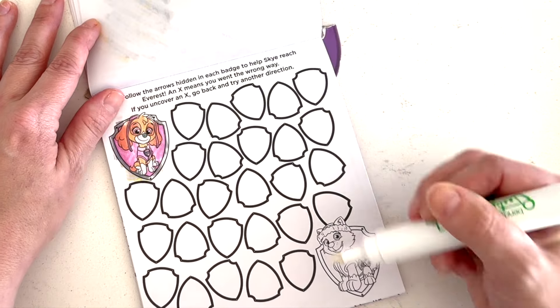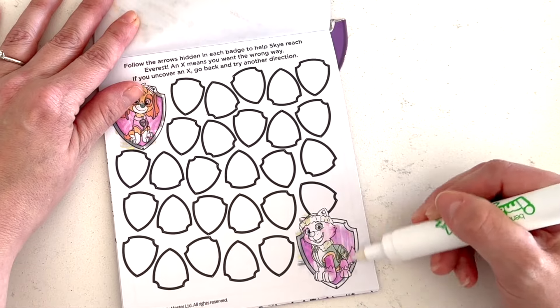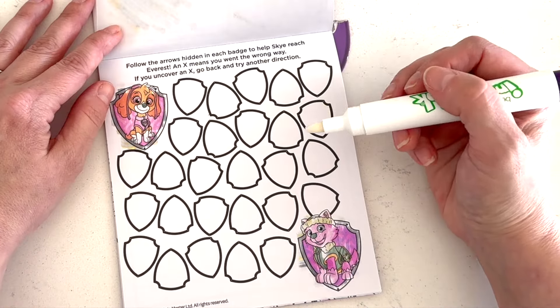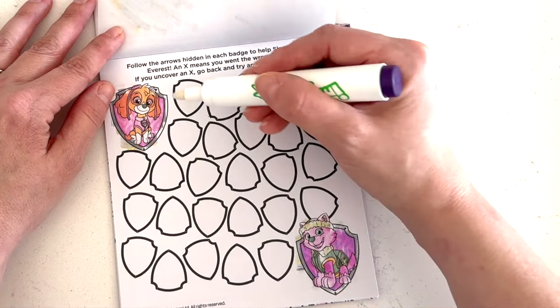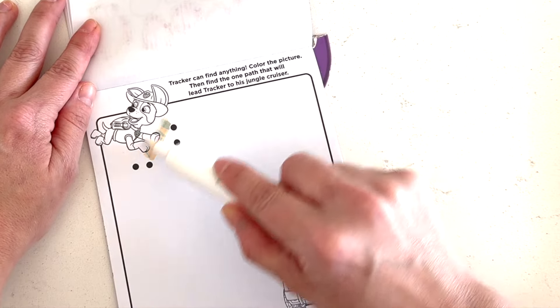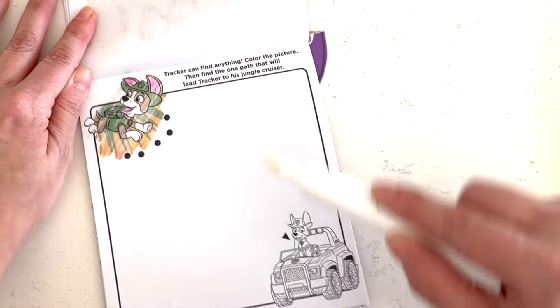Follow the arrows hidden in each badge to help Skye reach Everest. And X means you went the wrong way. If you uncover an X, go back and try another direction. Okay. Let's start with Skye. She's trying to get to cute little Everest down here. Hmm. Let's start here. One, two, three, four, five, six, seven, eight, nine, ten. Wow. This is a complicated path. Wow. We did it. We got to Everest.